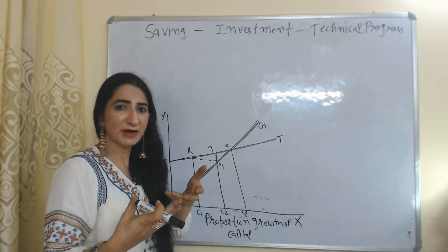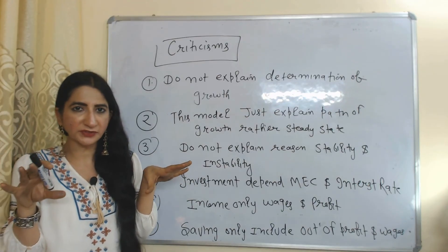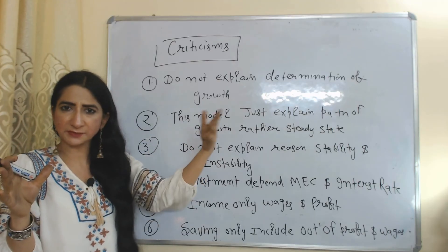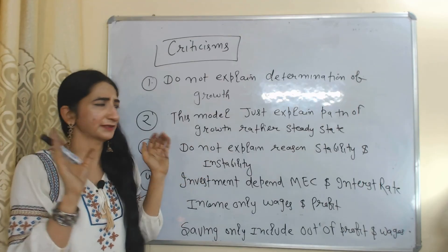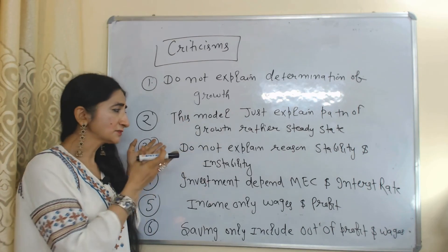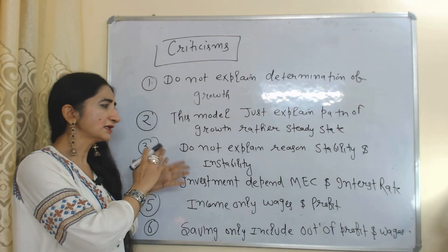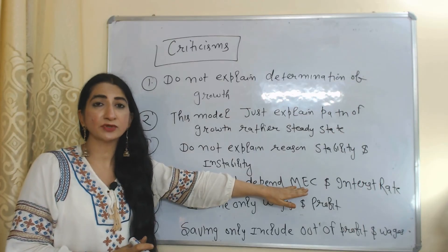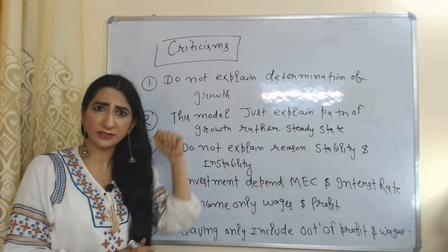Now we will see criticism of this model. This model does not explain the determination of growth as explained by Harrod and Domar — those who follow the Harrod-Domar model will criticize Kaldor. This model just explains the path of growth rather than the steady state. This model does not explain any reason for stability and instability. This model ignores that investment depends on the marginal efficiency of capital (MEC) and interest rates.